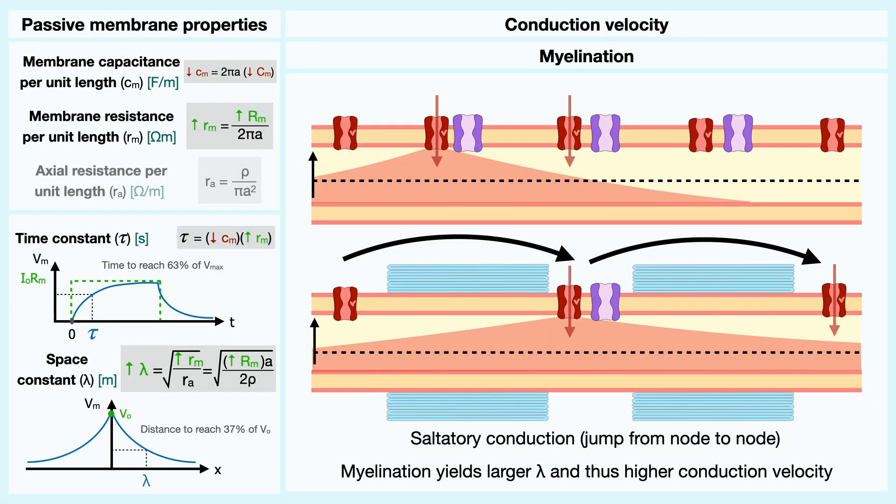As a final comment about the action potential and this section on the propagation of the signal, I want to show you that by using the equations that I've presented in our discussion, it is possible to simulate through computer programs the Hodgkin and Huxley model to follow the evolution of a train of action potentials over time resulting from a current injection.